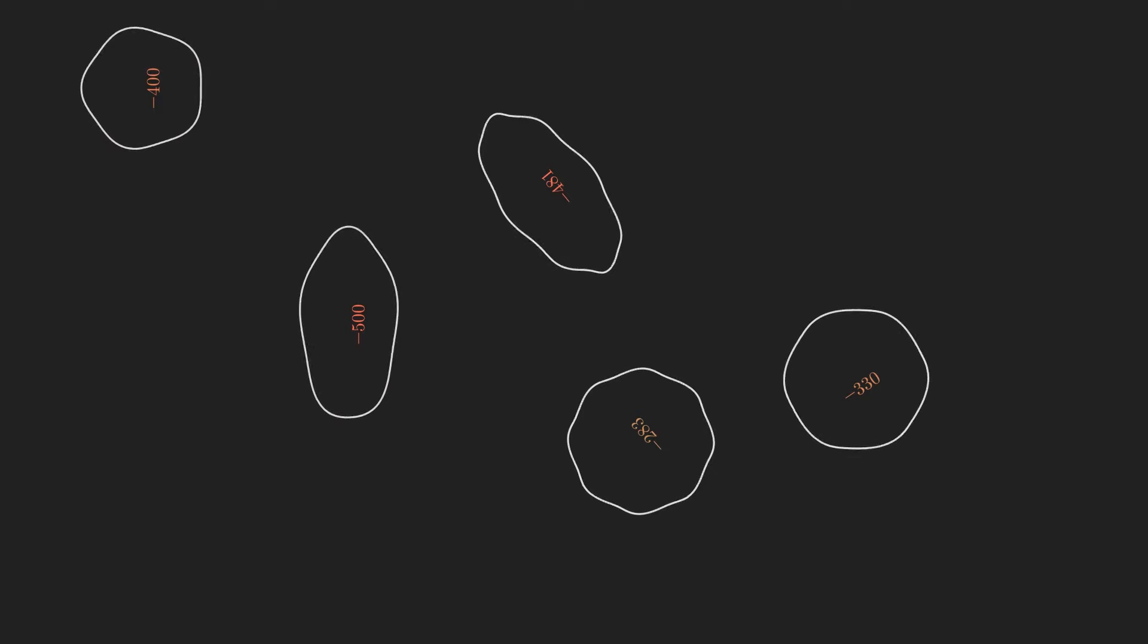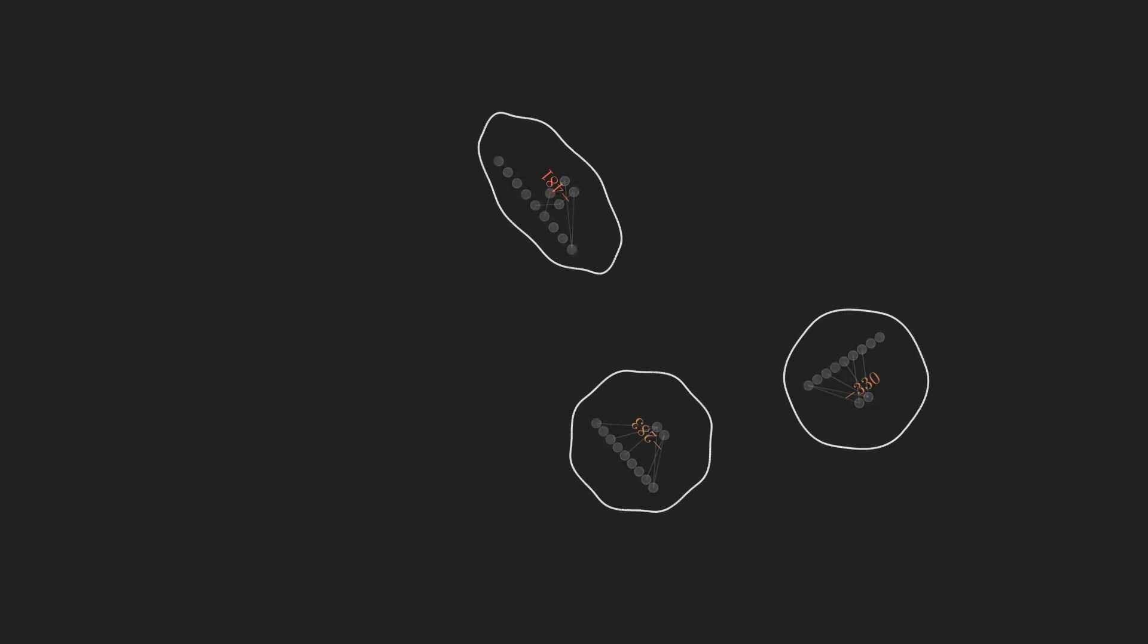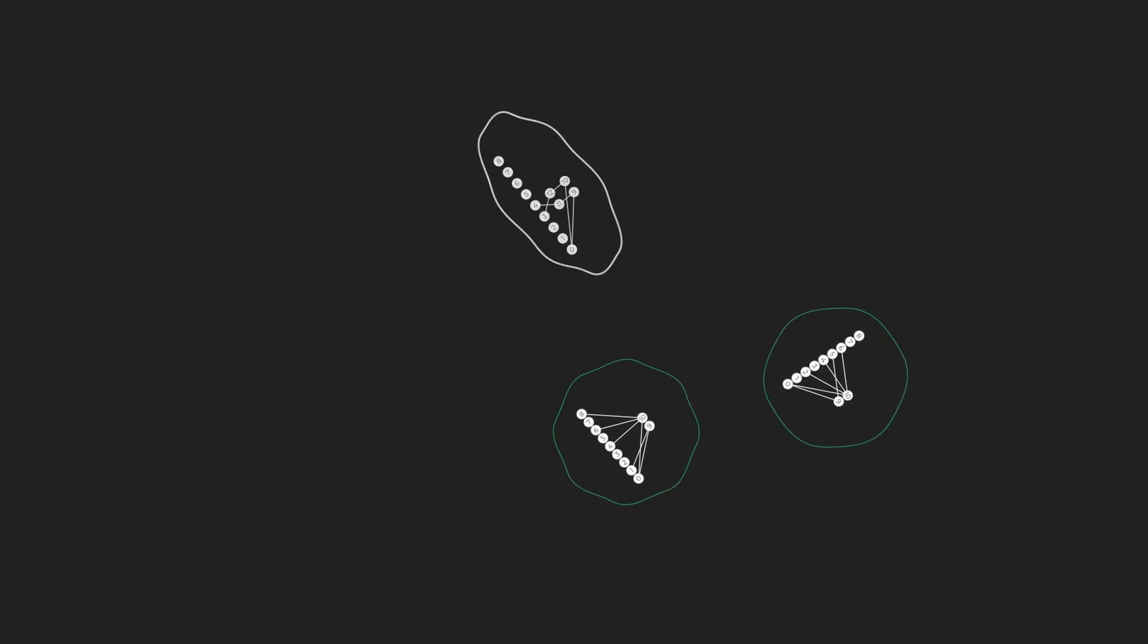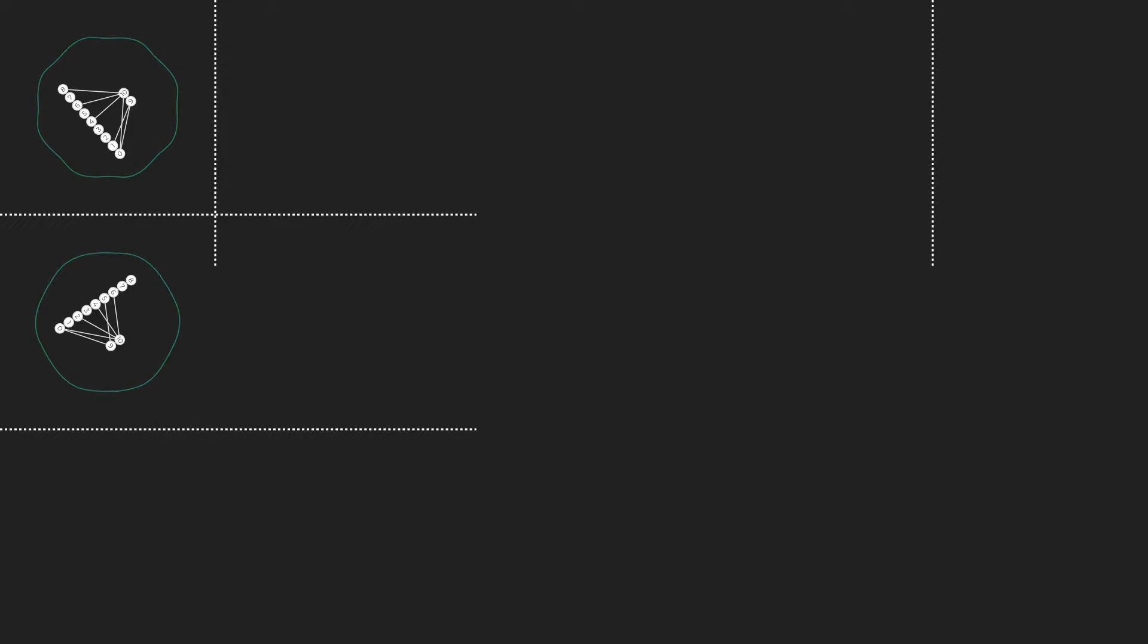Therefore each generation, every species loses a certain percentage of their least fit individuals. In each species, the remaining individuals are then paired up and their genes are combined in a process called crossover. How many offsprings a given species can produce is proportional to the sum of its adjusted fitness values.